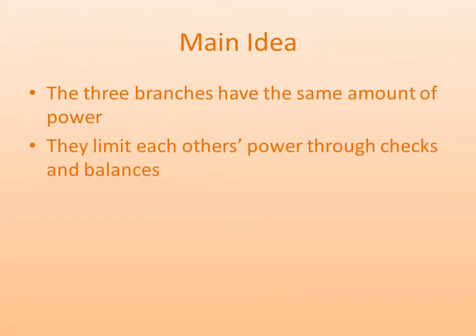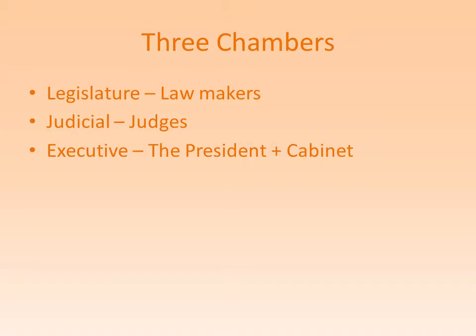The main idea of the Federalist Paper No. 10 is that the three branches — the legislature, the judicial, and the executive — have the same amount of power in the government, and they limit each other's power through checks and balances. Here are the three chambers.